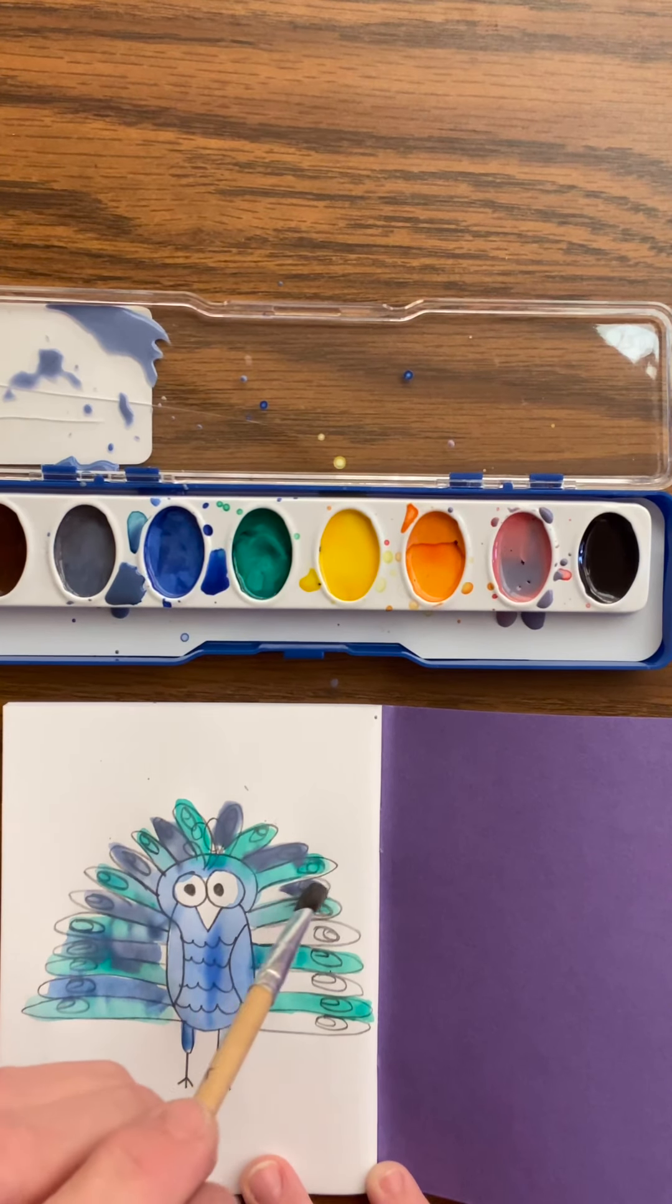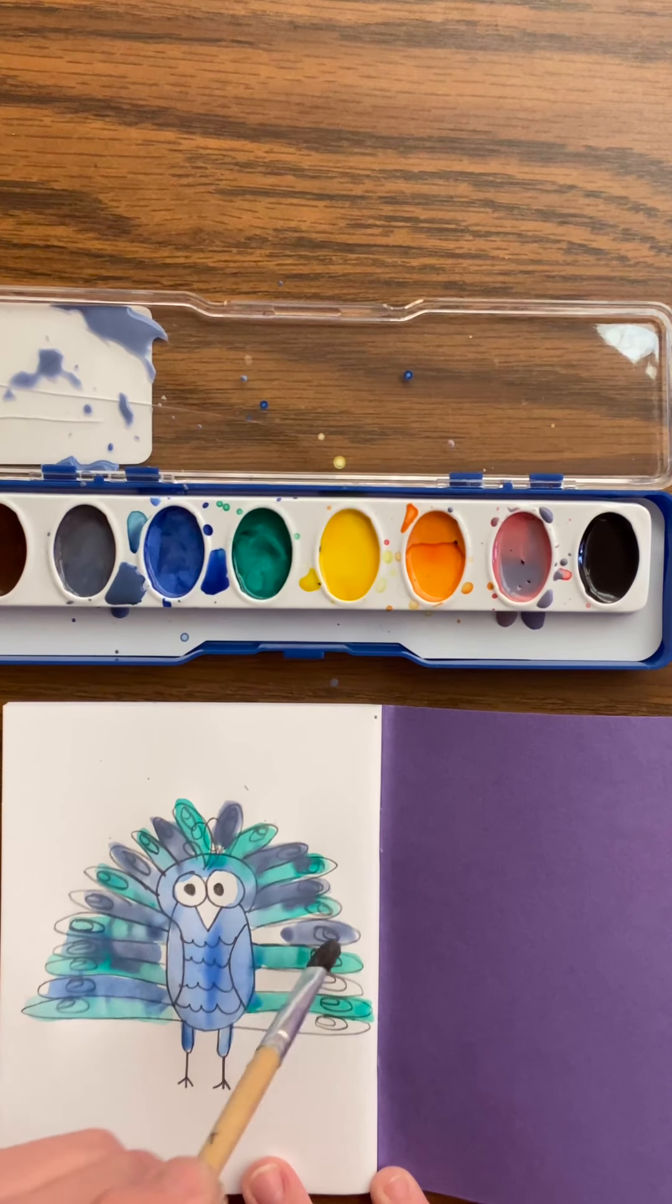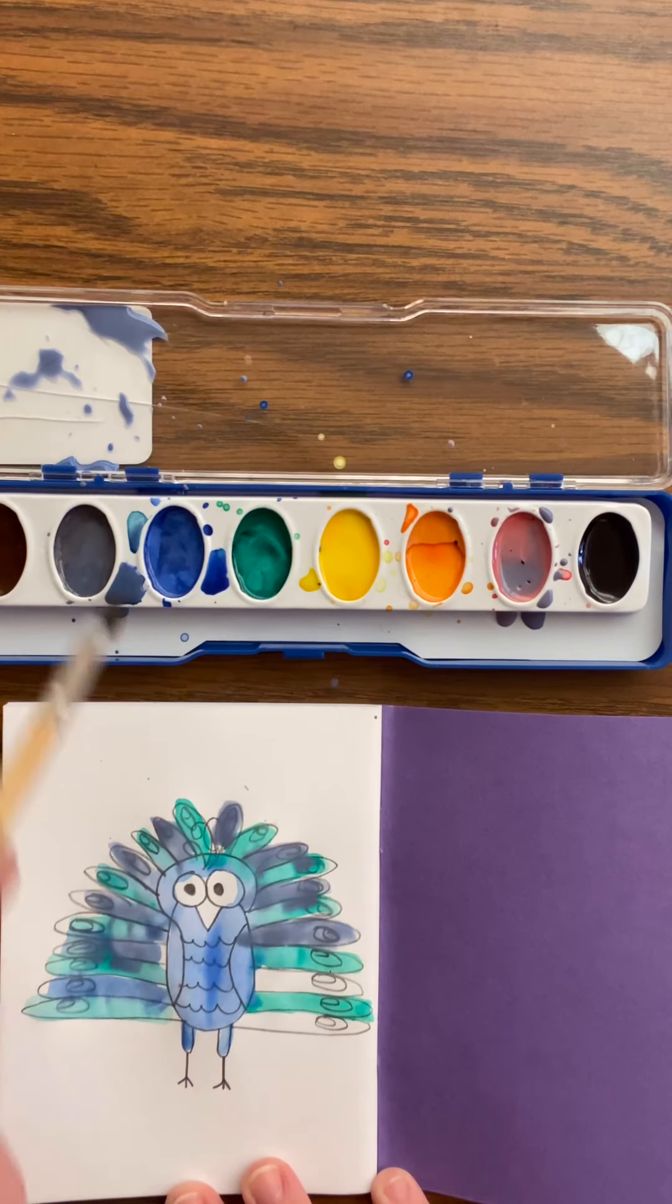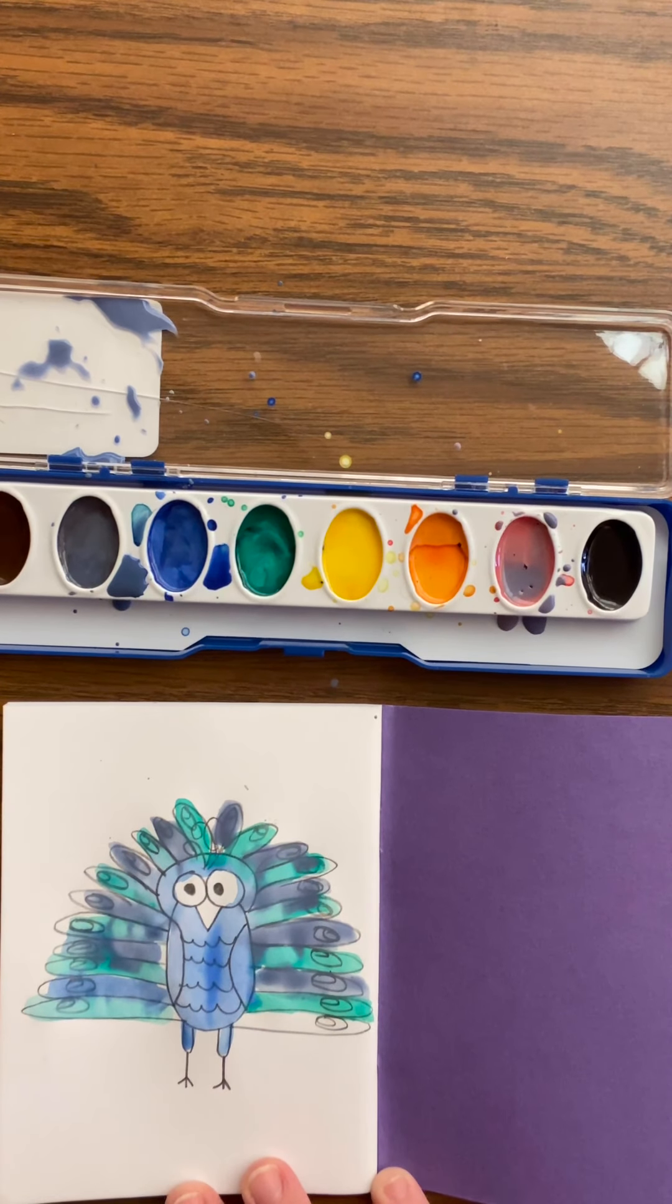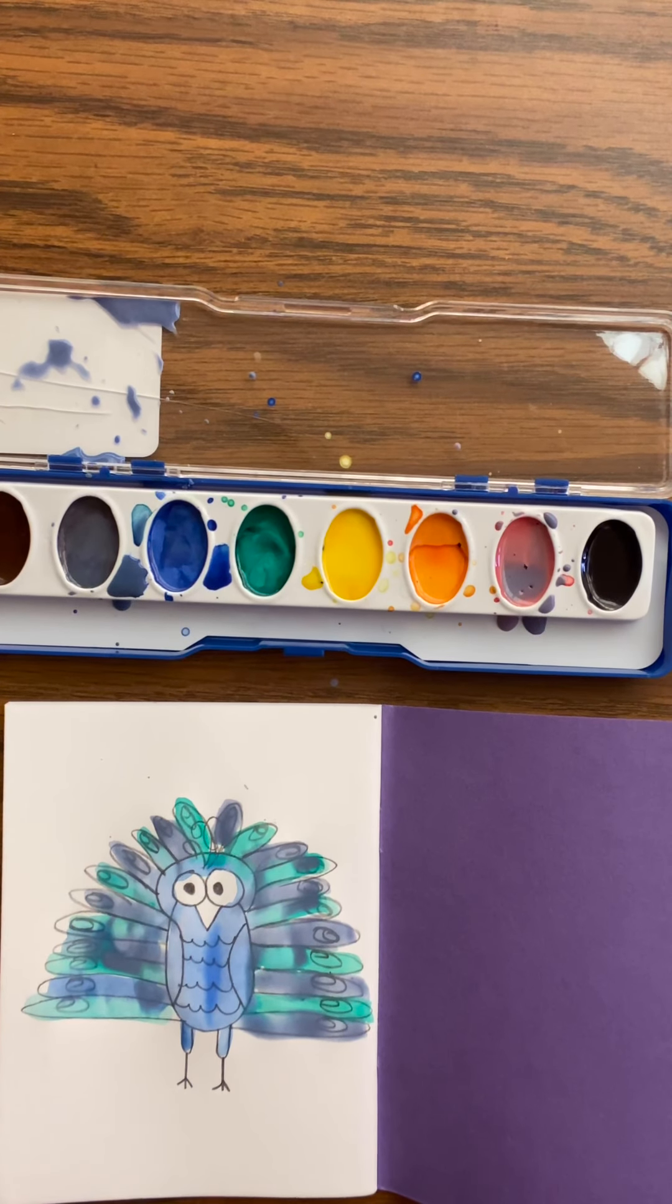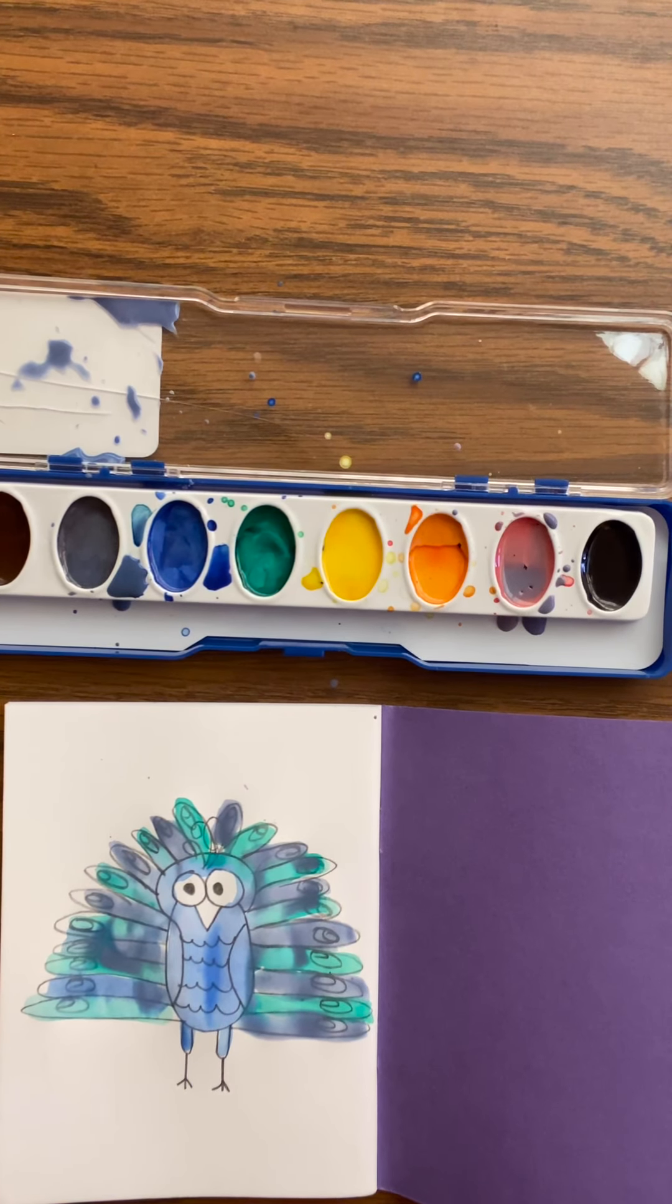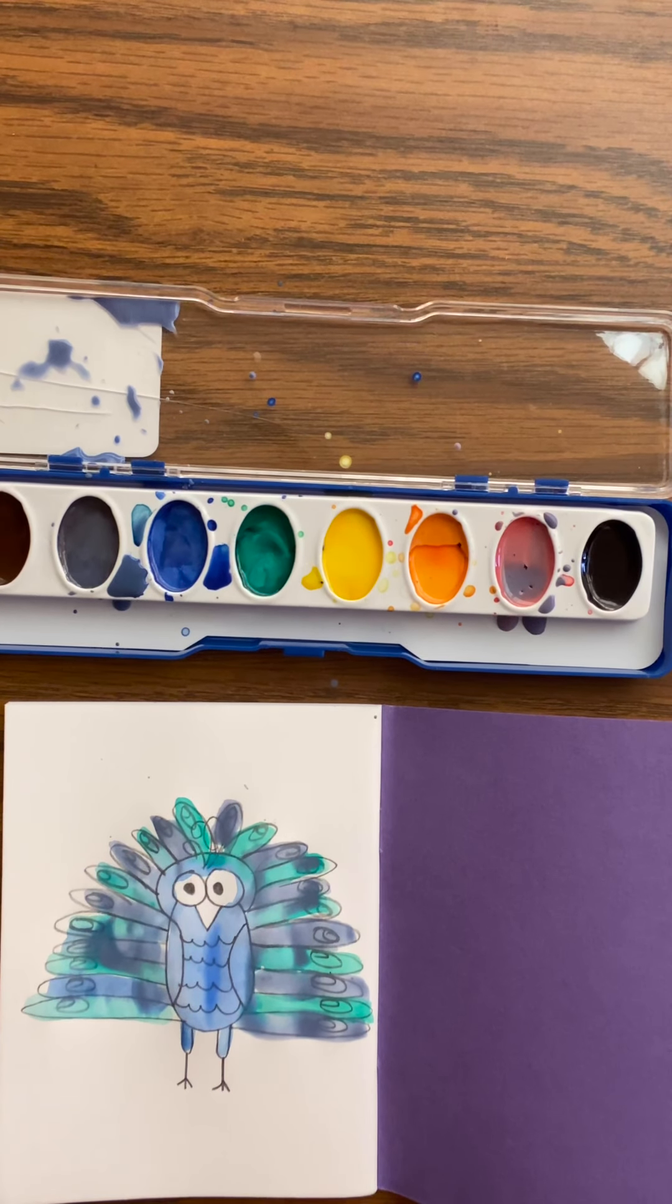While this is drying, I can think about if I would like yellow or orange for my beak or feet or both. Once this is dry, I can paint my orange or yellow. Don't paint it until blue, green, and purple are dry. You will get it very badly blended and it will run together and make the most awful type of brown.